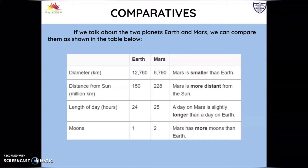Mars is smaller than Earth. From the distance of the Sun, Mars is more distant from the Sun than Earth. The length of the day: a day on Mars is slightly longer than a day on Earth. For the moons, Mars has more moons than Earth. As you can see, we're comparing different characteristics of both planets.